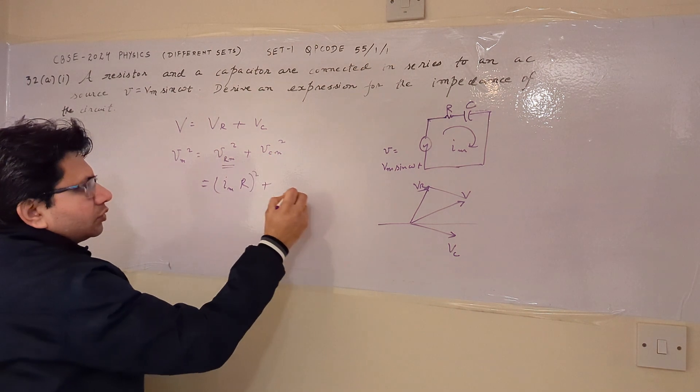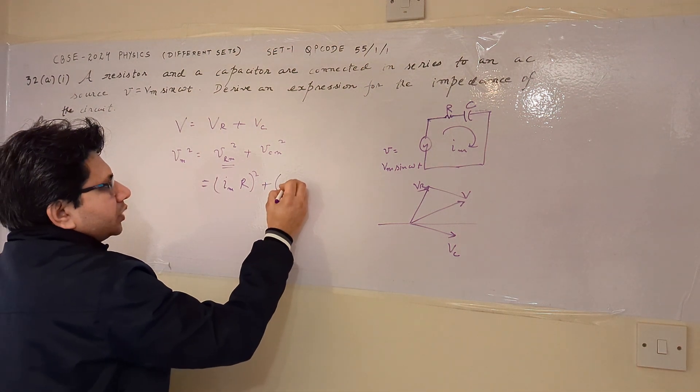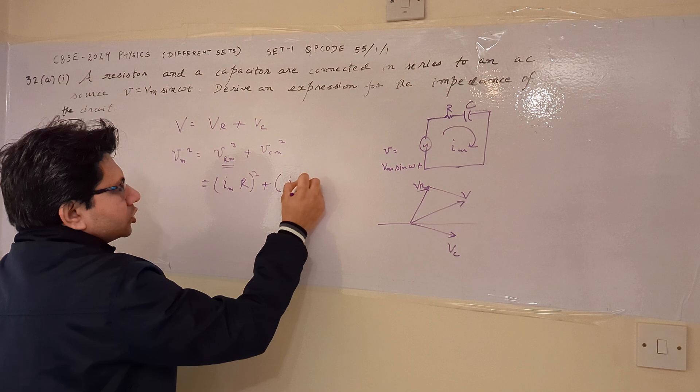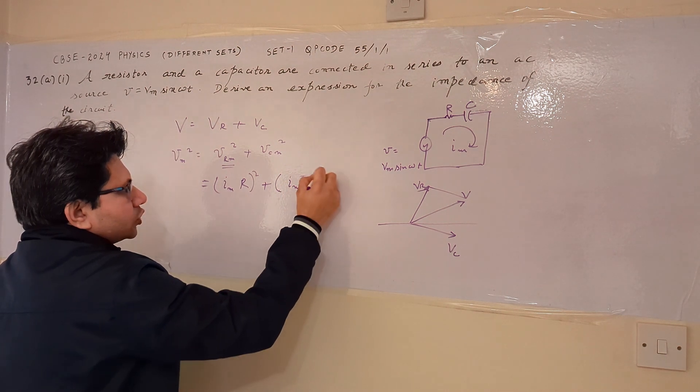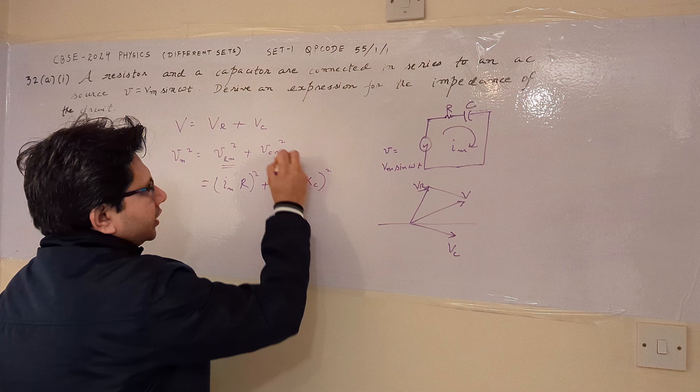Now for the capacitor, the voltage across capacitor Vcm square. So we can write it down as Vm upon Im, this value is Im into Xc, where Xc is the capacitive reactance and its square.